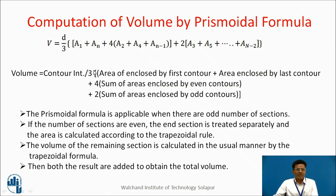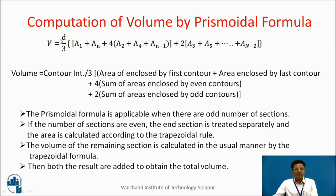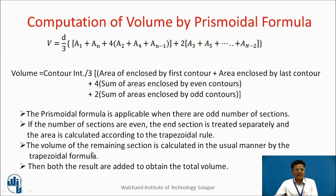There is one more formula called the prismoidal formula, which is better than the trapezoidal rule. The volume V = (d/3) × [a1 + an + 4(a2 + a4 + ... + an−1) + 2(a3 + a5 + ... + an−2)]. That is, contour interval divided by 3, multiplied by the first area plus last area, plus 4 times the sum of areas enclosed by even contours, plus 2 times the sum of areas enclosed by odd contours. This formula is applicable when there are an odd number of sections. If the number of sections is even, the end section is treated separately using the trapezoidal formula and then added.